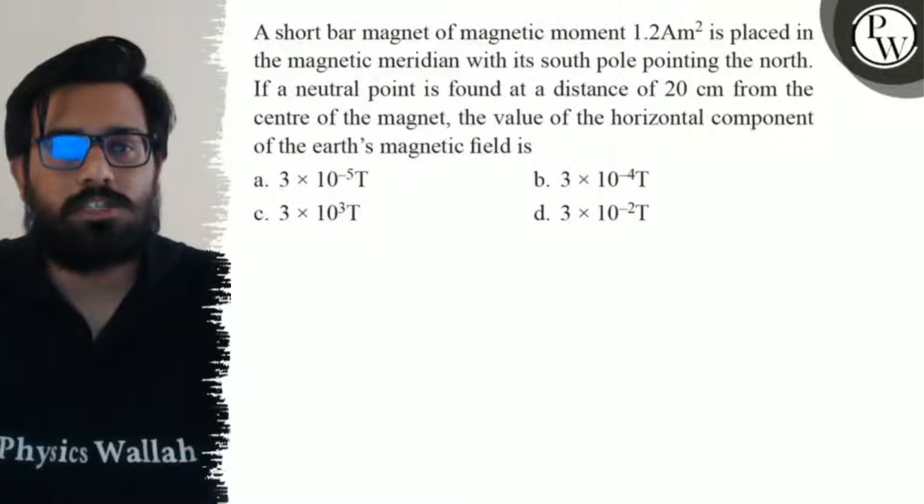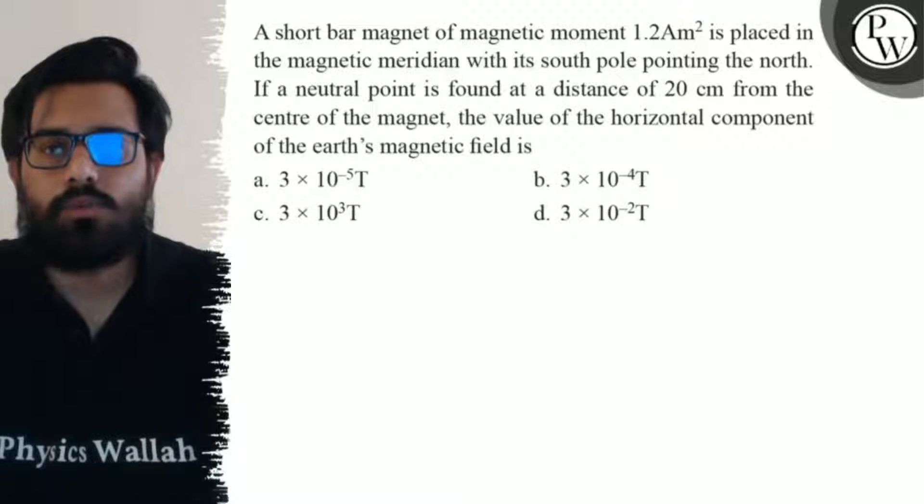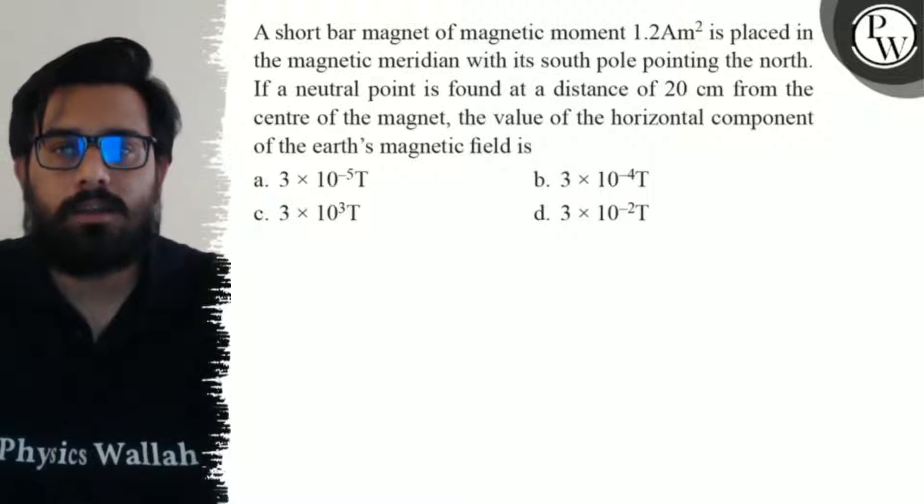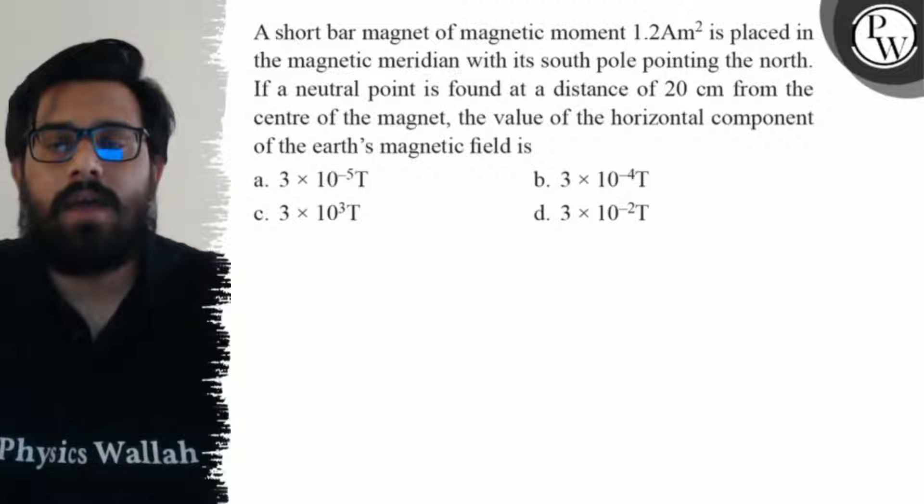Hello, so let's see the question. A short bar magnet of magnetic moment 1.2 ampere meter squared is placed in the magnetic meridian with its south pole pointing the north. If a neutral point is found at a distance of 20 centimeters from the center of the magnet, the value of the horizontal component of the earth's magnetic field is...